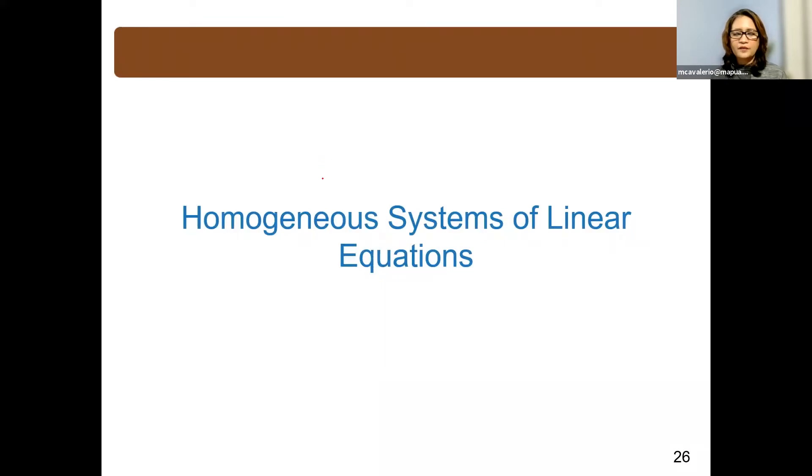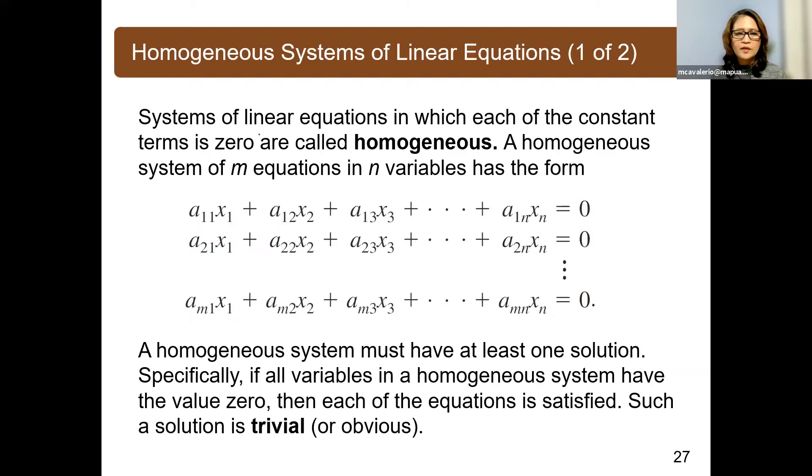Another type of a system of linear equations is the homogeneous system of linear equations. A system of linear equations in which each of the constant terms is zero are called homogeneous. A homogeneous system of M equations in N variables has the following form. So we have M number of equations in N unknowns where the right side are all zero.